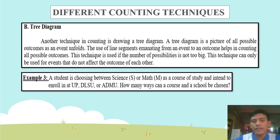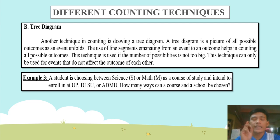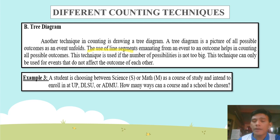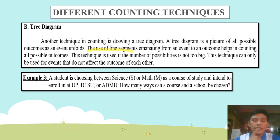The next one is the tree diagram. Another technique in counting is drawing a tree diagram. A tree diagram is a picture of all possible outcomes as an event unfolds. The use of line segments emanating from an event to an outcome helps in counting all possible outcomes. This technique is used if the number of possibilities is not too big.